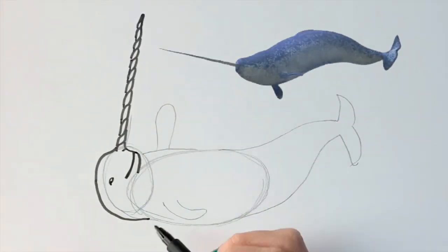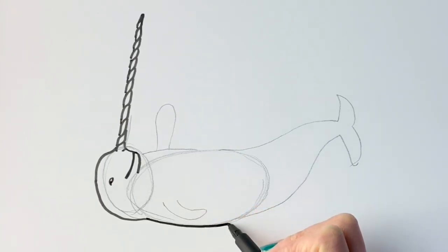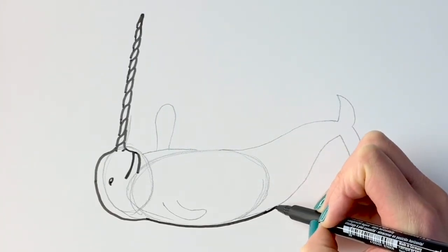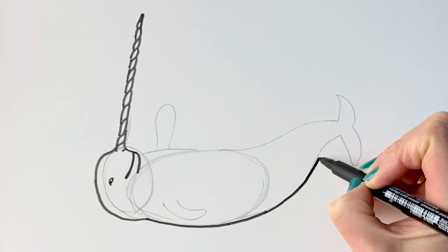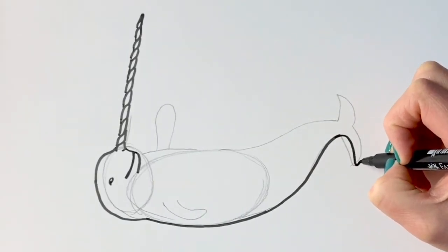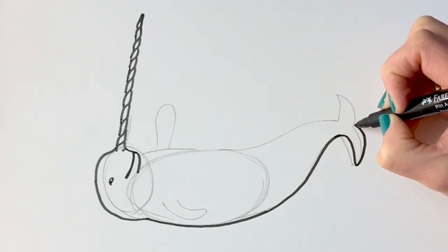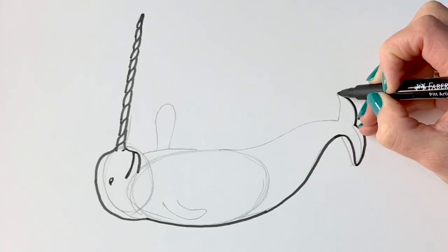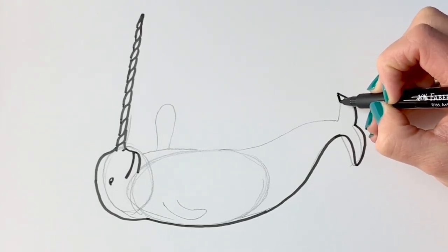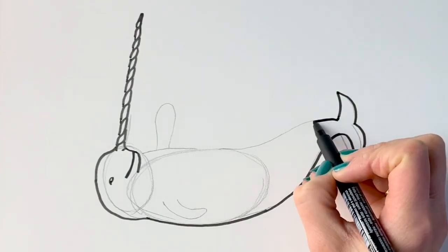Narwhals can live up to 50 years, although the average is usually between 30 and 40 years. So, I'm then going to carry on with this line all the way around until we get to there. Now we're going to carry it on, and then we're going to draw the tail here. Just like that. And then we're going to go back round.